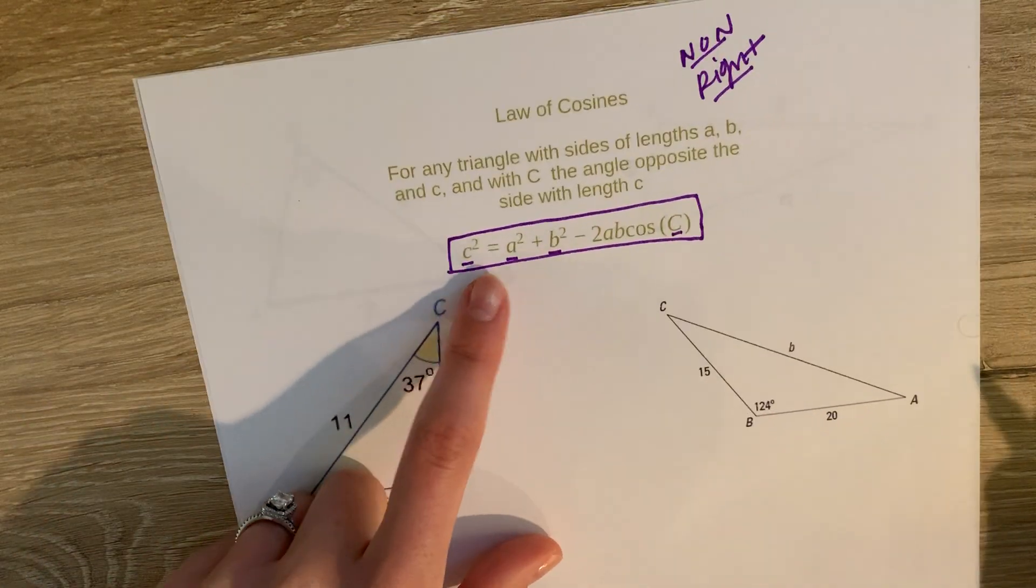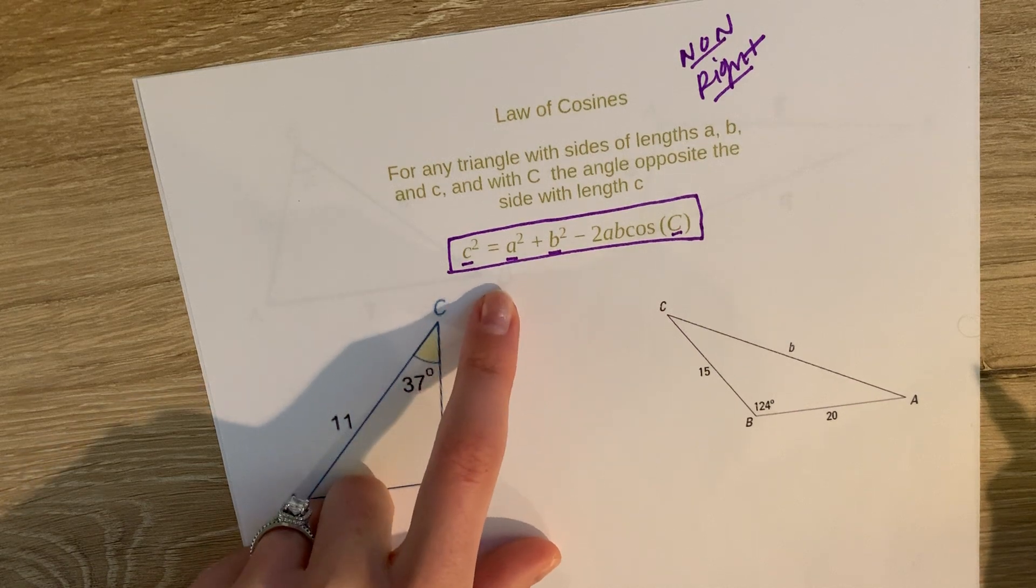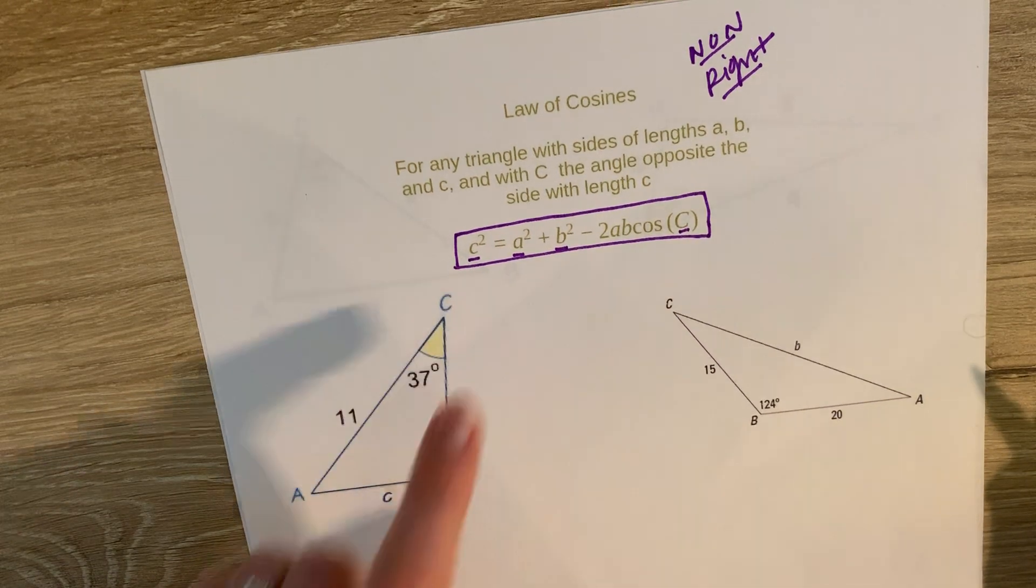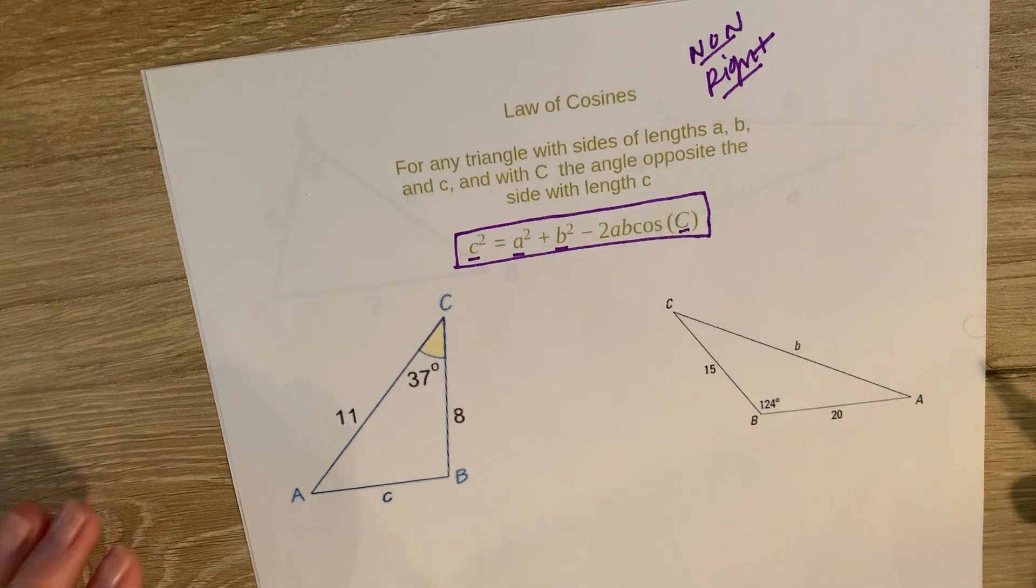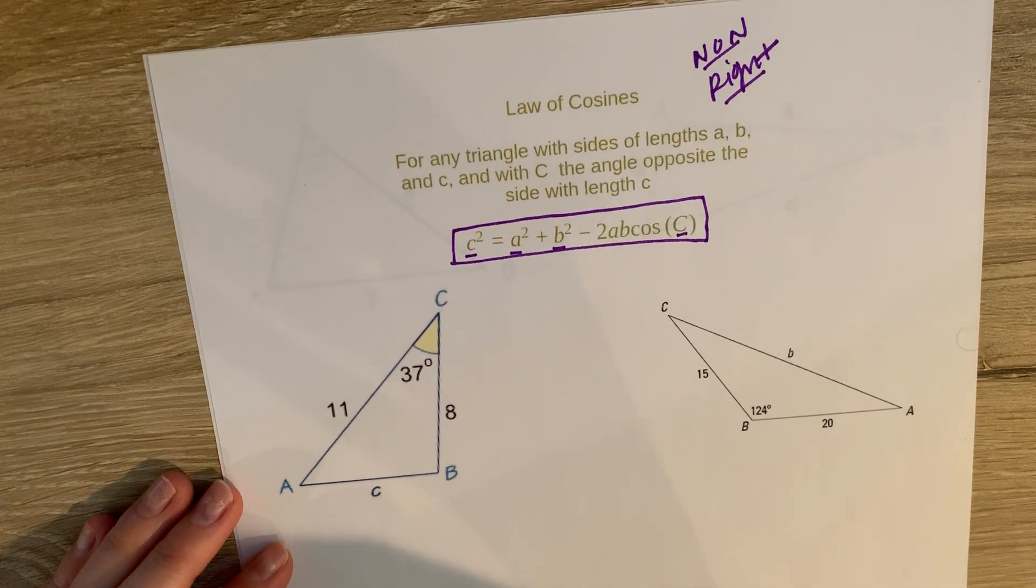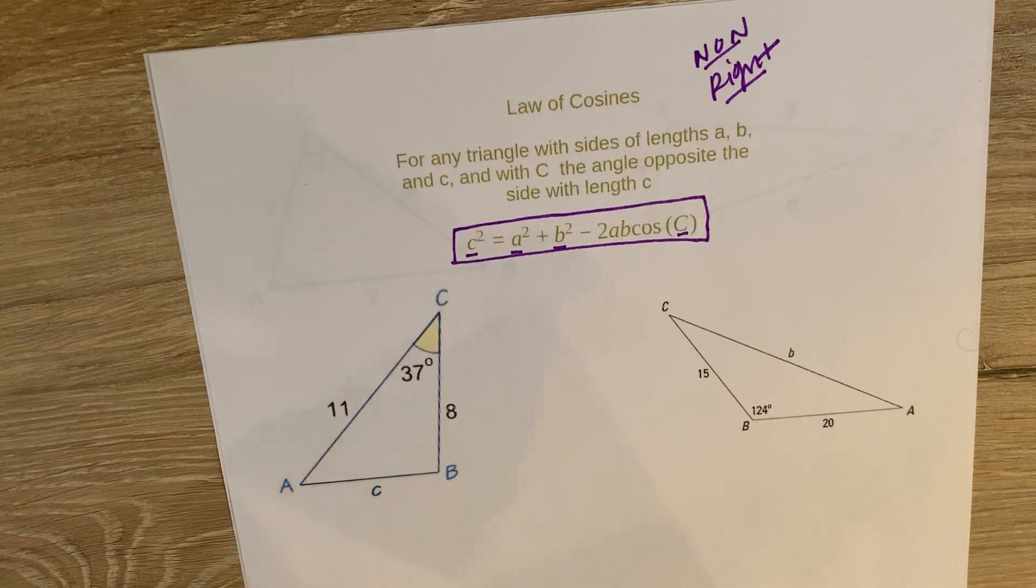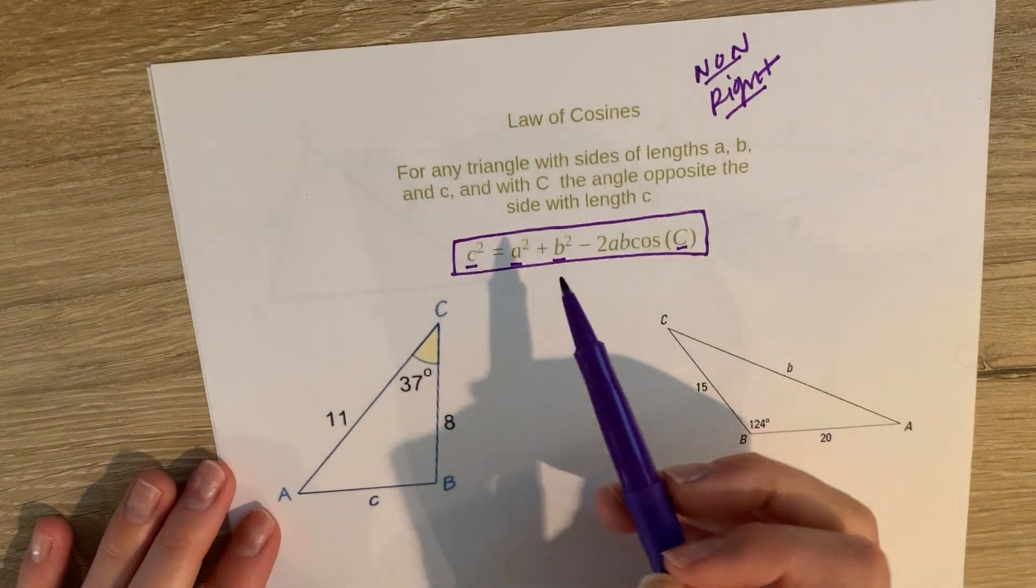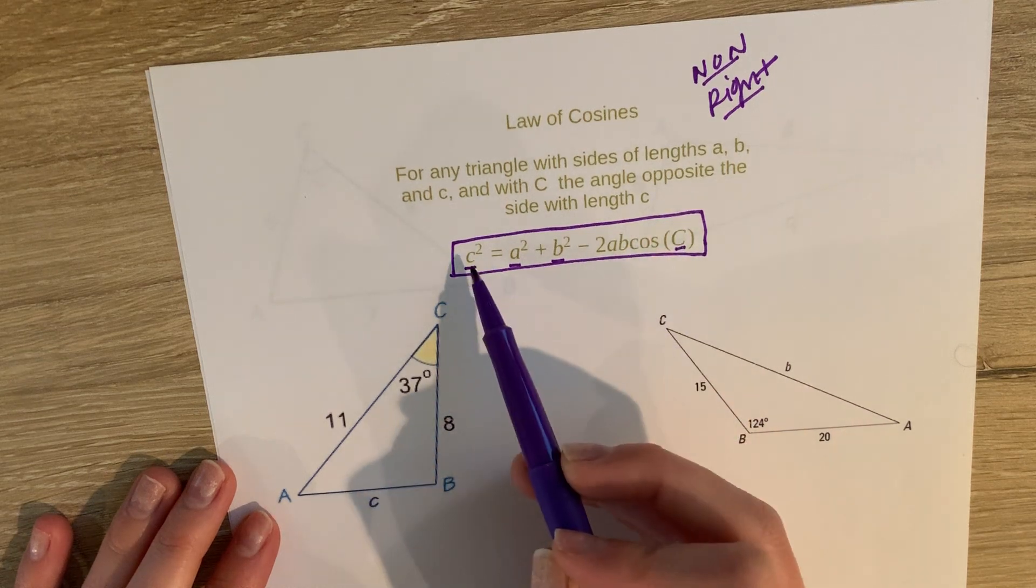Now, I think some of you are probably like, wow, that looks kind of like the Pythagorean theorem, right? And even though we're not going to go through about how that came about, yes, it comes from the Pythagorean theorem a little bit. We are dealing with triangles. So you will see that the Pythagorean theorem did play a role in creating this equation.